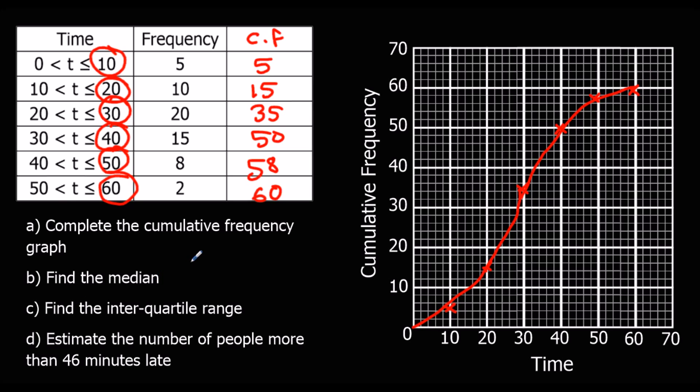And then we're asked to find the median. So the median is the middle number. If I've got 60 on the frequency, half of that, 30. So the 30th one. Along from 30 and down. So 28, 28 minutes.